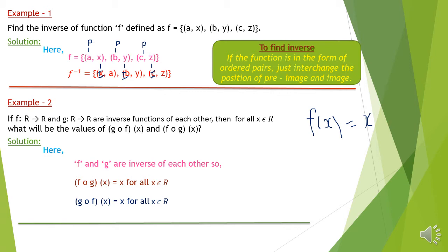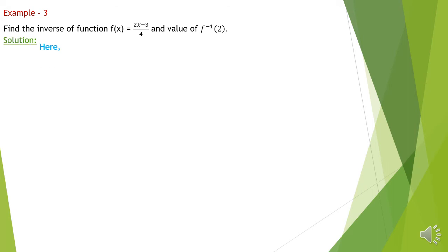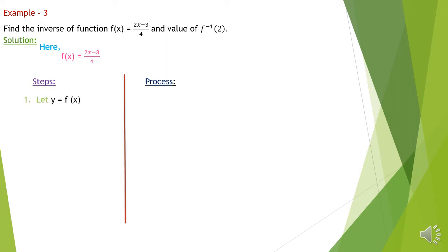Let's move quickly to example three. Here the function is defined in a different way — not as a set of ordered pairs but as a formula: f(x) = (x−3)/4. We have to find the inverse. This is the first time we are going to find the inverse of a function given as a formula. Pay attention and focus — the given function is f(x) = (x−3)/4.